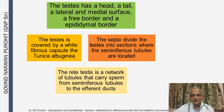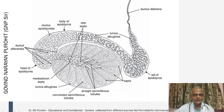Septa divide the testes into lobules where the seminiferous tubules are located. The rete testes is a network of tubules within the hilum, the mediastinum, and carries sperm from the seminiferous tubules to the afferent ducts of the epididymis. In the diagram you can see the septa, lobules containing straight and convoluted seminiferous tubules, the tunica albuginea, mediastinum testes, rete testes, caput epididymis, ductuli deferens, ductus epididymis, body and tail of the epididymis connecting to the ductus deferens.